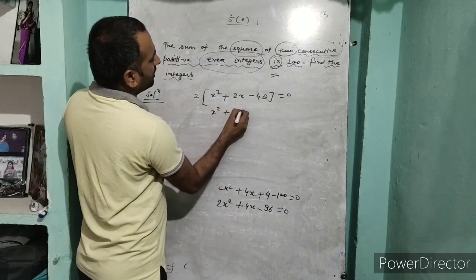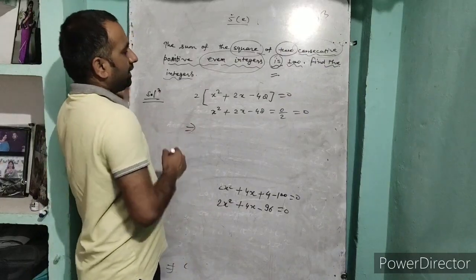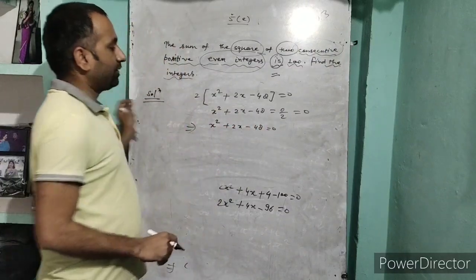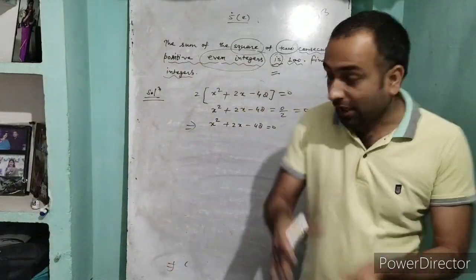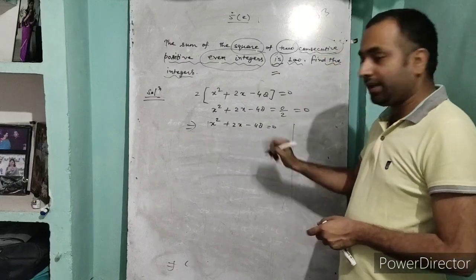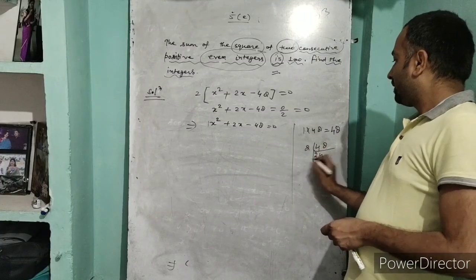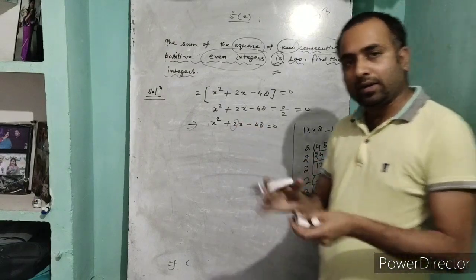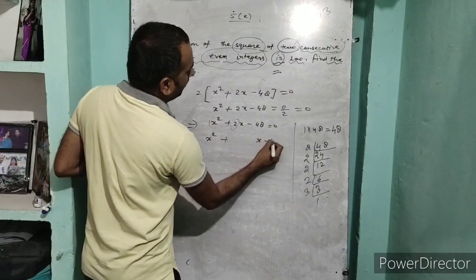Our quadratic equation is x² + 2x - 48 = 0. Now we need to solve it by factoring. The coefficient of x² is 1, so we multiply 1 by 48 to get 48. We find the LCM factors of 48: 2×24, 2×12, 2×6, 2×3. We need two factors that subtract to give 2. So 8 and 6 work, since 8 - 6 = 2. We split 2x into 8x - 6x.